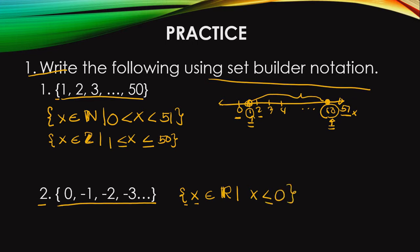If we plot this on a number line, we have 1, 0, negative 1, negative 2, negative 3. So we start at 0 because it is included in the set. From 0, we go to negative 1, negative 2 — so to the left, because these are negative values.